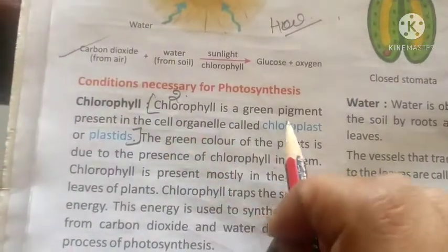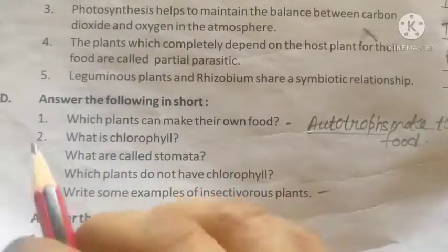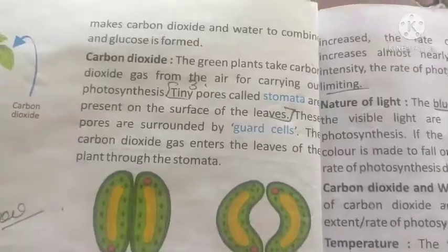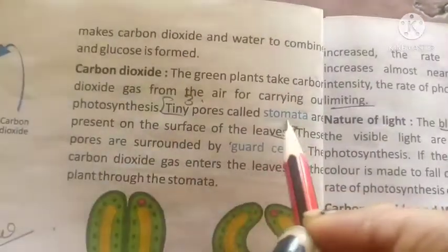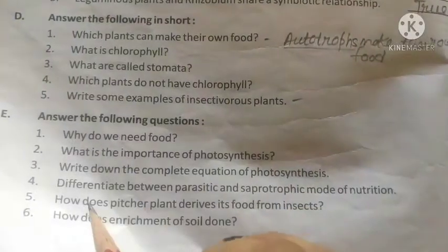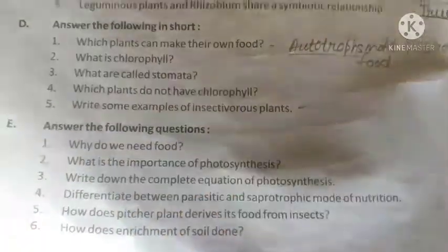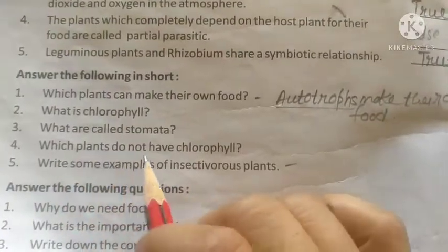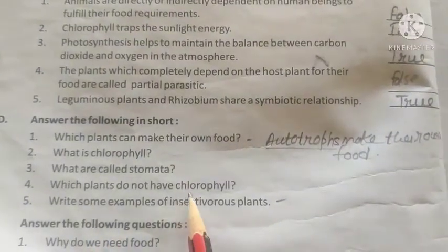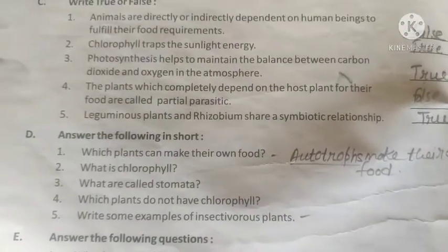Second question: what is chlorophyll? Chlorophyll is the green pigment found in plastids. Which plants do not have chlorophyll? We will do the next class because we will study it then. We will complete the chapter and answer them.